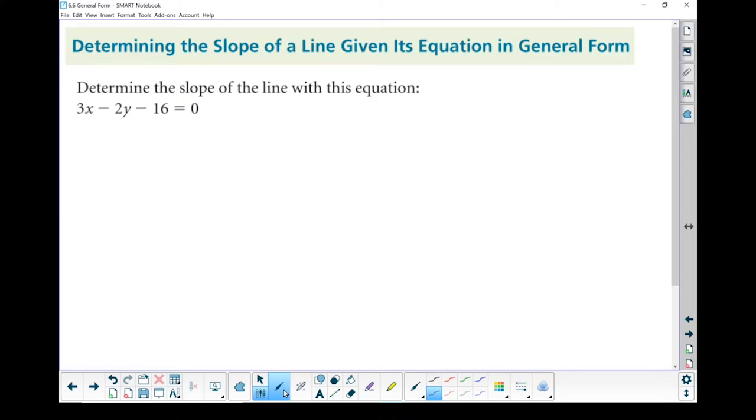Now if only we had a form of the equation where the slope was easy to calculate or easy to find. Oh, wait, we do. So what we should do is we're going to convert this to slope-intercept form. Now in order to convert it, we're going to have to do some algebra. Essentially, we're going to isolate the y. So let me rewrite this, get it a little easier to work with.